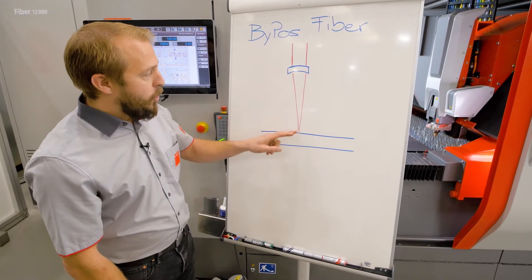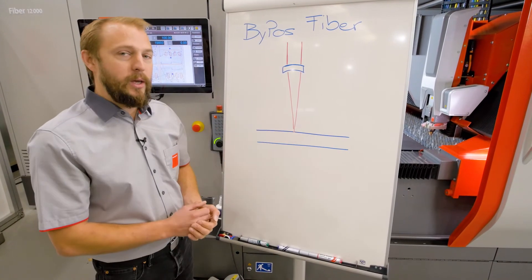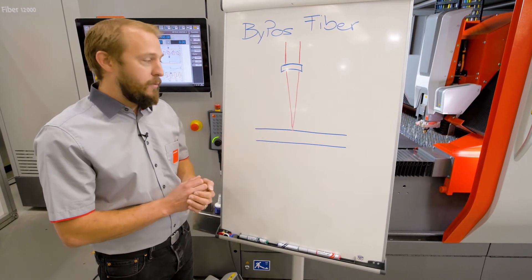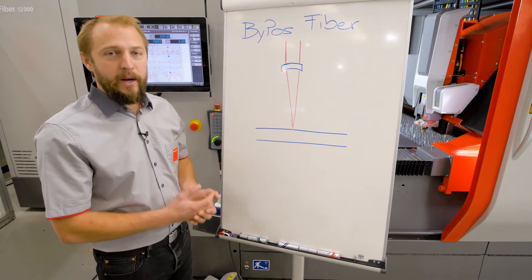So the beam is going through the lens being put here on a very small spot. We call this the focal point. That's why we have the highest density of energy.